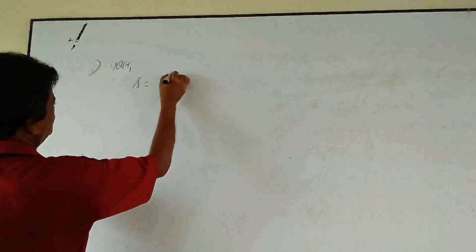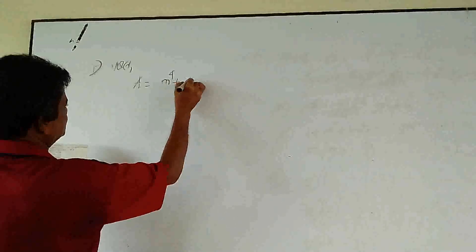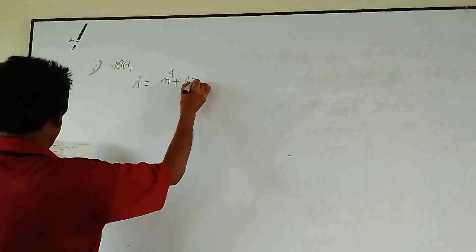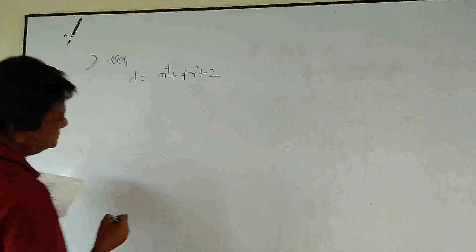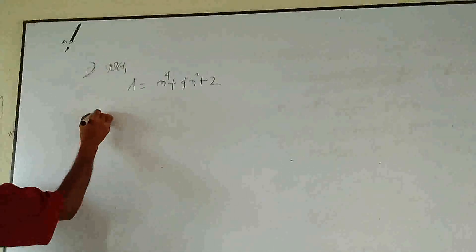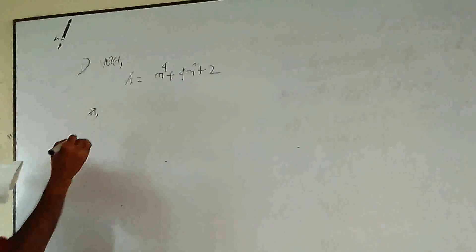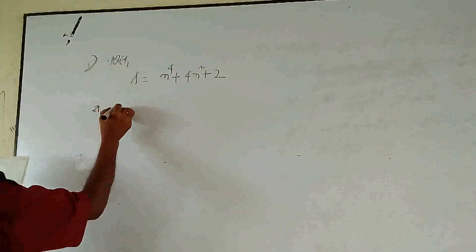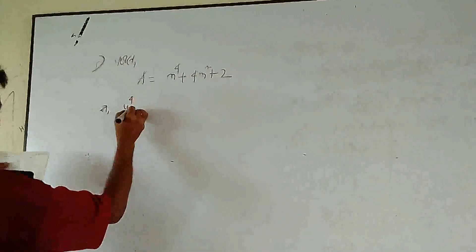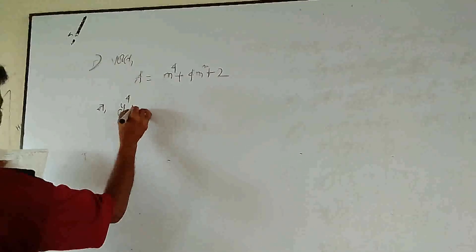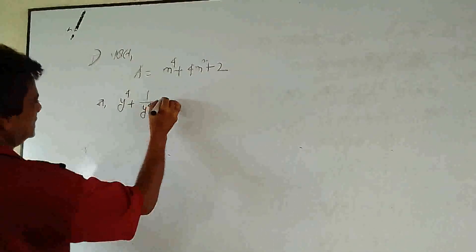M squared 4 plus 4 M squared plus 2. A1 to Y squared 4 plus 1 by Y squared 4.